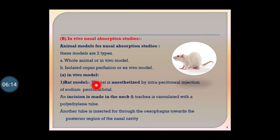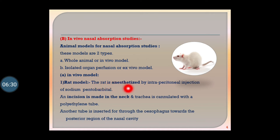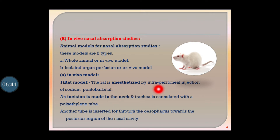For in vivo models, rat, rabbit, monkey, and guinea pigs are used. For the rat model, the rat is first anesthetized by intraperitoneal injection of sodium pentobarbital.